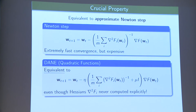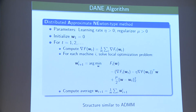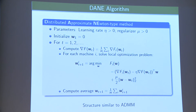A question arises: isn't solving the full local problem harder than a Newton step? No, because there's regularization and one can use methods like SAG, SVRG, or SDCA. One could also use conjugate gradient, but that would require iterations scaling with the dimension or square root of the condition number, so the number of communication rounds would scale with the condition number and you lose the improvement. The key point is that the algorithm avoids explicitly computing d-by-d Hessian matrices.